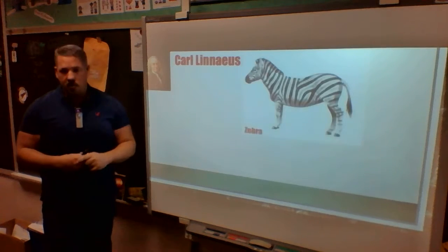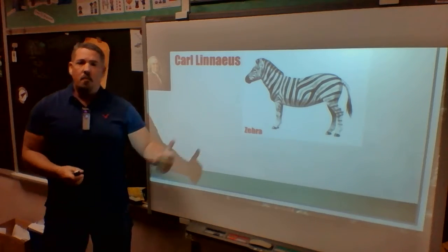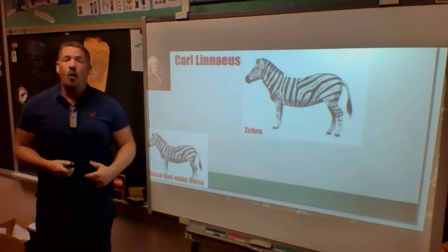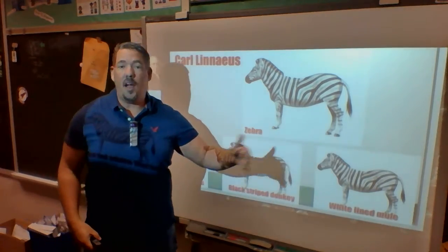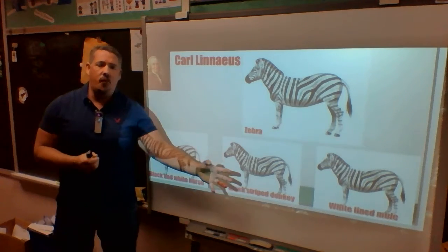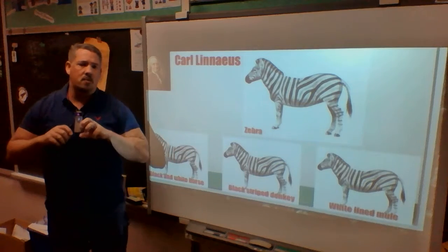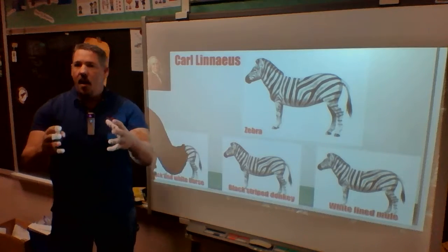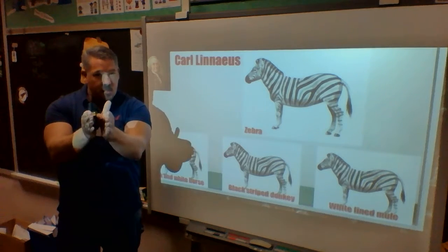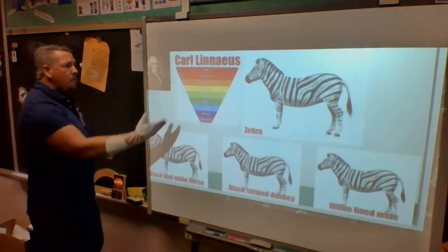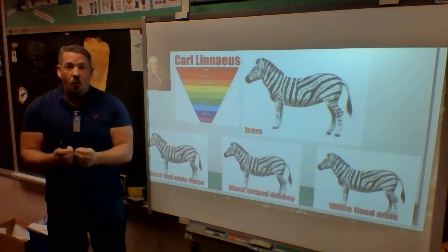Let's say he was studying a zebra. You and I would call it a zebra — that's its common everyday name. However, a scientist from one country might call it a 'black and white horse,' another might say 'black striped donkey,' and another 'white-lined mule.' It would seem like four different organisms, but Carl Linnaeus realized they were all talking about the exact same thing. So he came up with a method of classifying things from big characteristics down to very individualized ones.